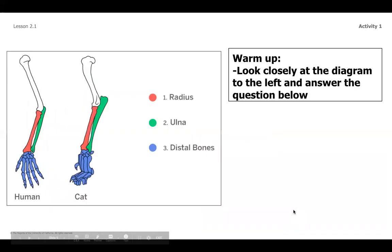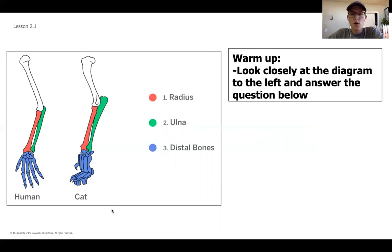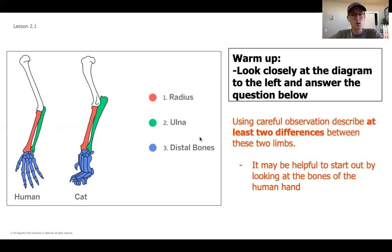Last reminder — if you need to grab a pencil and a piece of paper, we're going to start our warm-up now, which you may want to write down as you go through. This image is one we've looked at before. I want you to look closely at the diagram, which has color-coded some shared structures: the radius, the ulna, and the distal bones. In the past we looked at similarities; now I want you to look for differences between each of these structures. These shared structures can be slightly different and have different functions based on a few factors we'll dig into today.